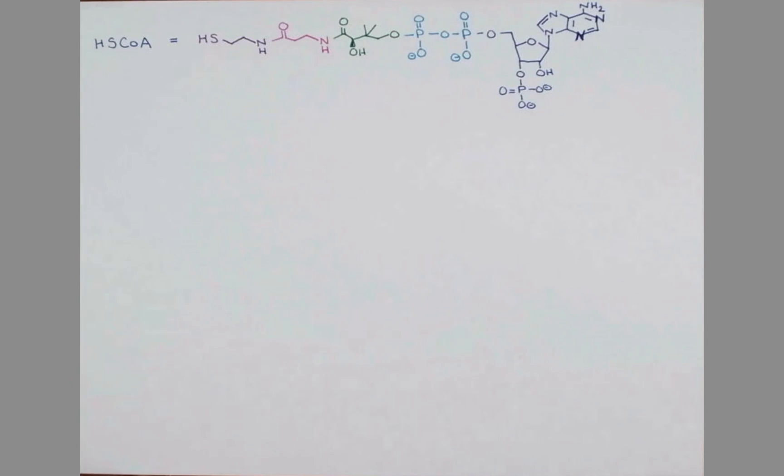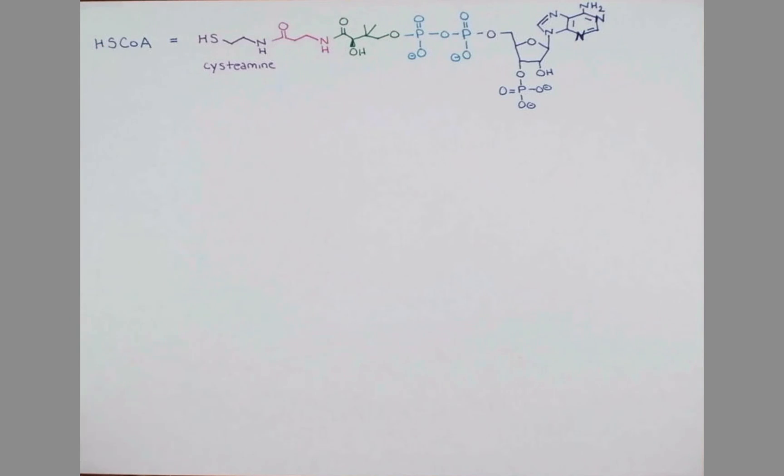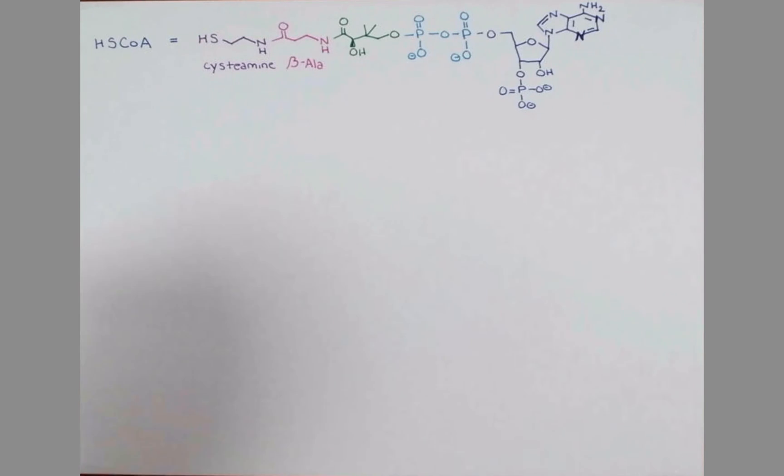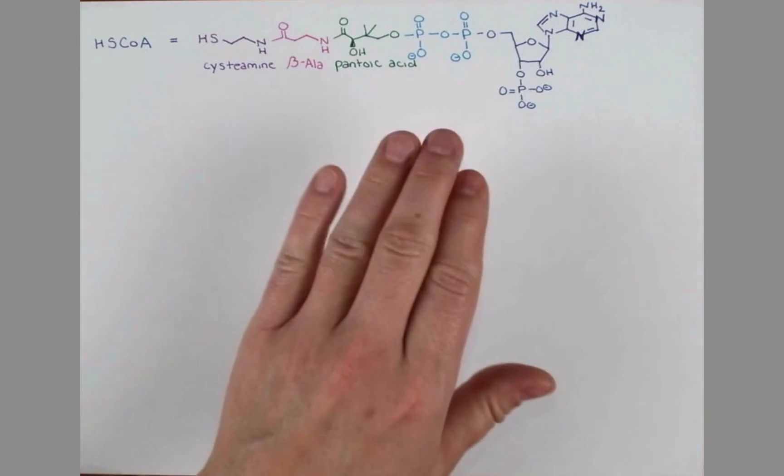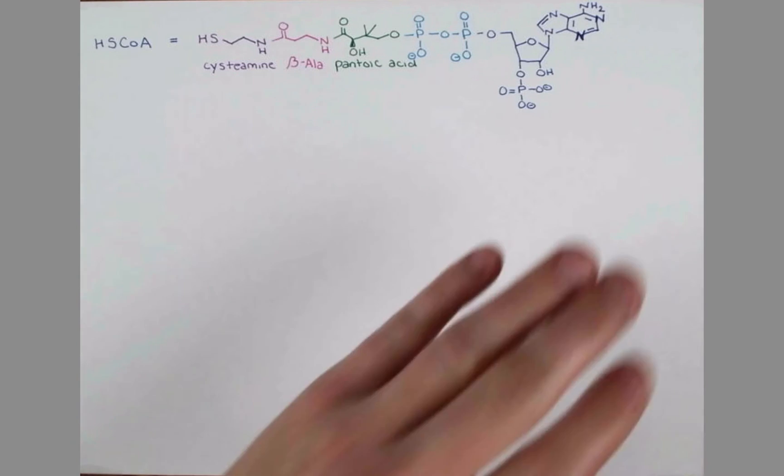But coenzyme A is actually made up of this cystamine, bonded in an amide linkage to beta-alanine, linked up in another amide to pantoic acid, then to a diphosphate, and finally to this 3-phosphoadenosine piece over here.